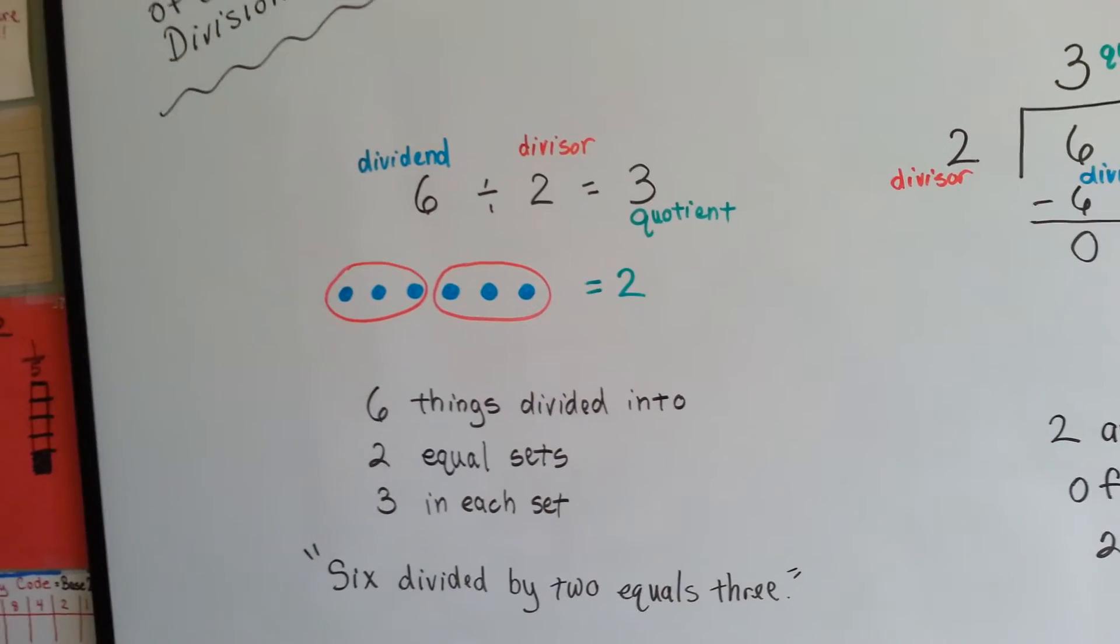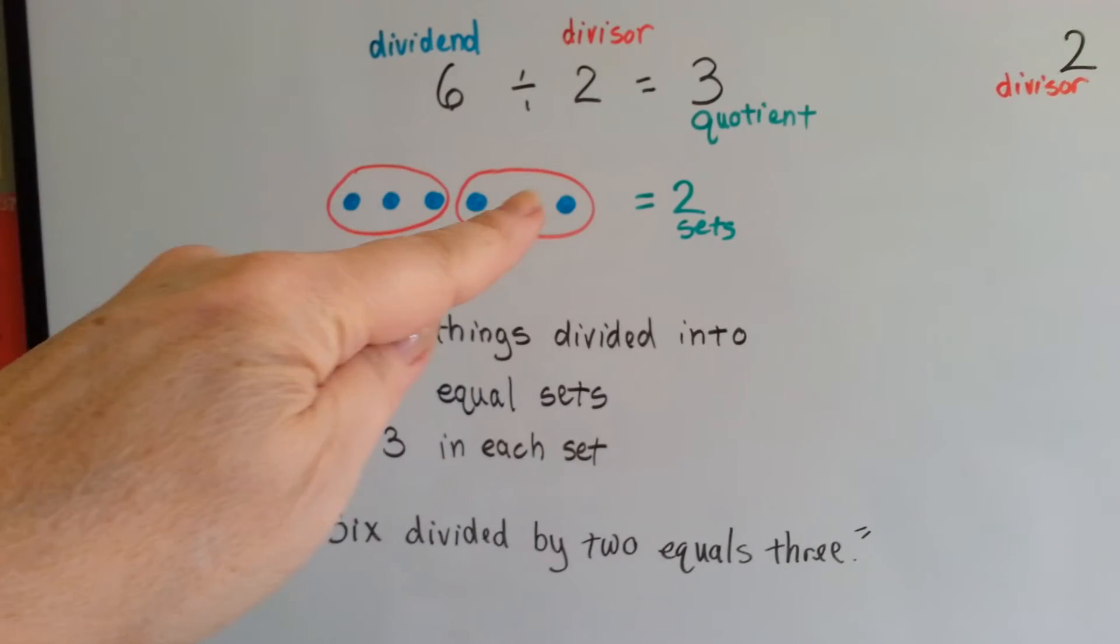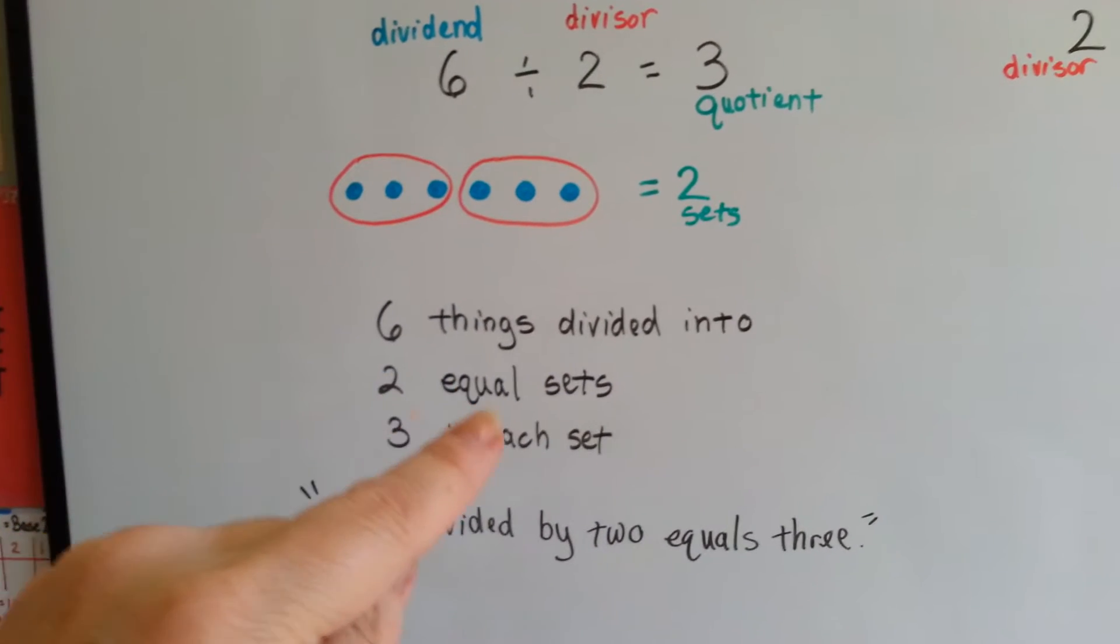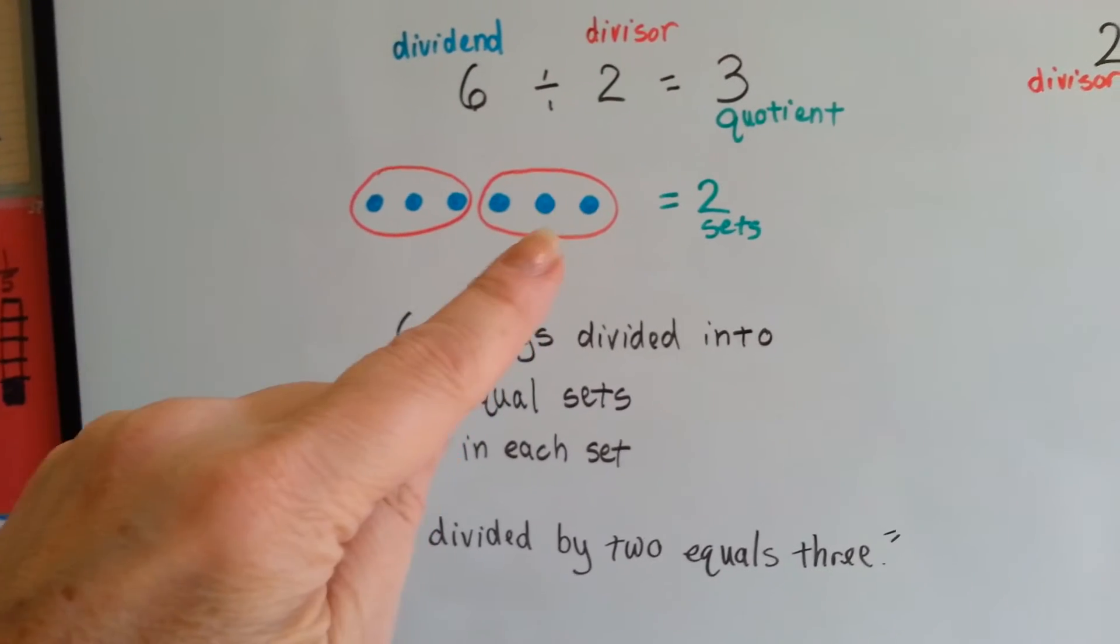One set, two set. You've got six things, six blue dots, divided into two equal sets. That puts three in each set.